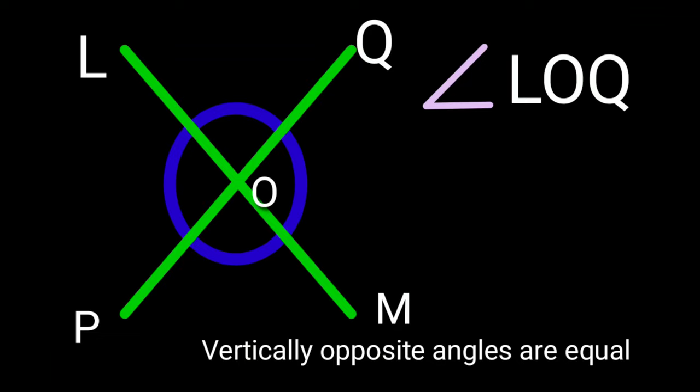So if angle LOQ is one angle, what is its vertically opposite angle? Angle POM. They are equal.